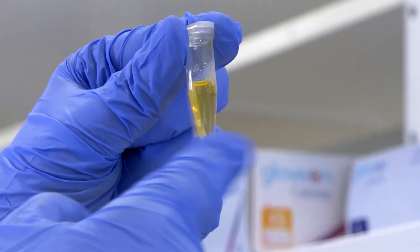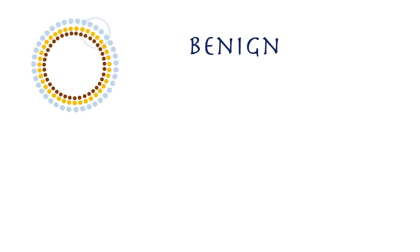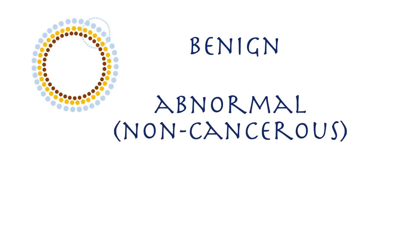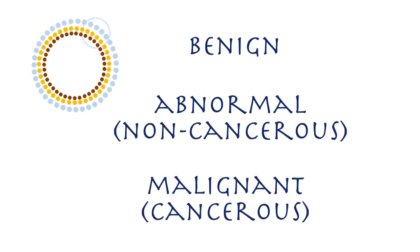There are three possible results from the biopsy testing: benign, abnormal but not cancerous, or malignant — cancerous. In the event that a biopsy is found to have abnormal cells or cancer, your doctor will want as much detailed information as possible in order to decide how best to treat the condition. This includes understanding genetic changes which may have happened within those cells.